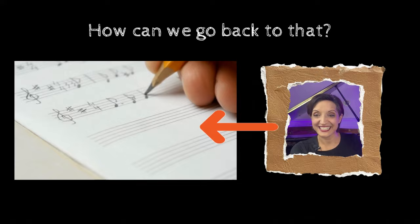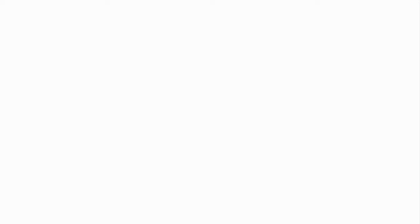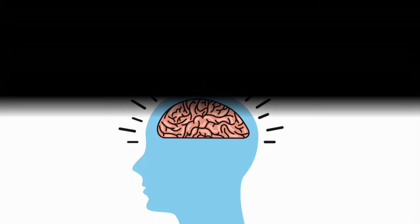But how can we go back to that? Let's take a broader view of the creative process from a cognitive perspective. Studies have shown that various brain regions are involved at the different stages of the creative process. When a musician or any creative individual embarks on the journey of creation, they traverse a series of cognitive stages that culminate in the birth of artistic expression.